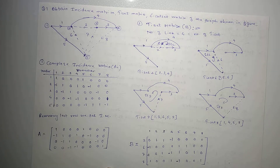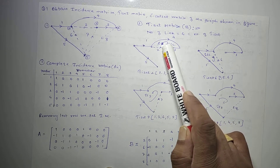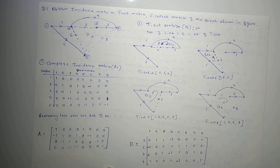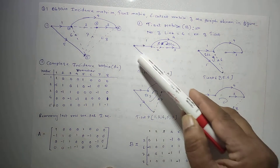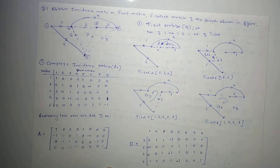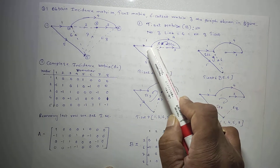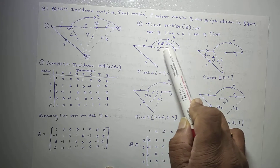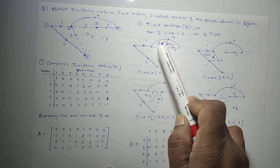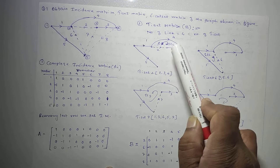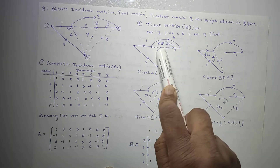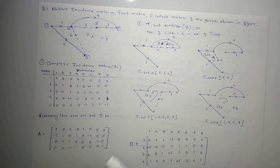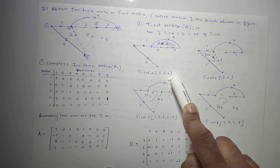To obtain the 4 tie sets, draw the tree and place each link on the tree one by one. When a link is added it forms a closed loop called a tie set. For example, placing link number 2 on the tree forms a closed loop through branches 2, 3, and 4 — this is tie set 2. The name of each tie set is the name of the link placed on the tree.